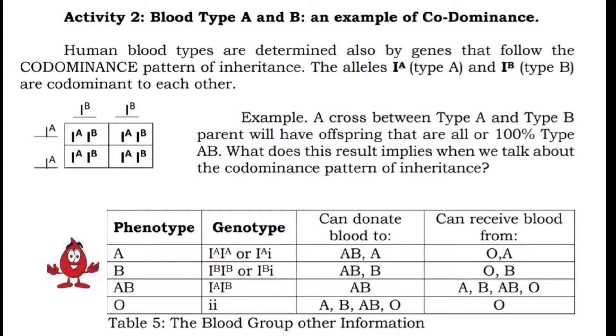Now, look at the table below. Here are the phenotype and the genotype of the blood types. If you notice, there are 4 human blood types: type A, B, AB, and O.